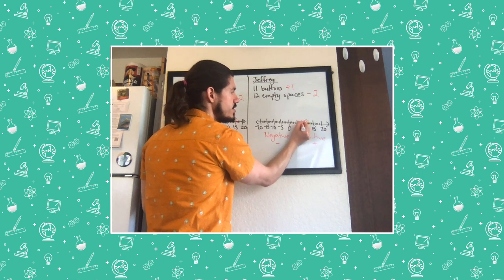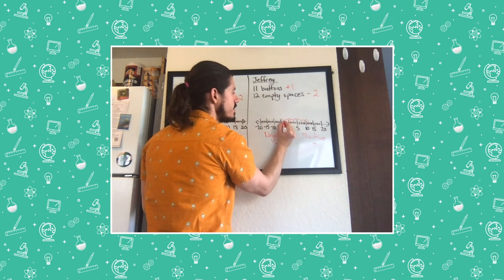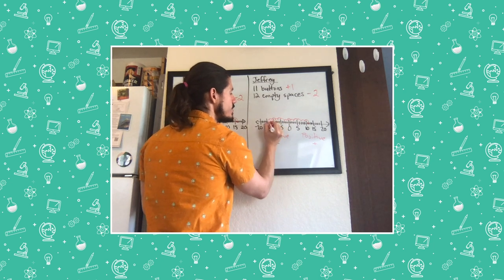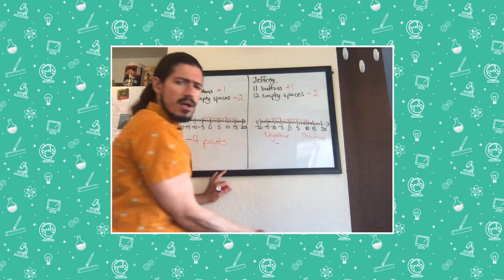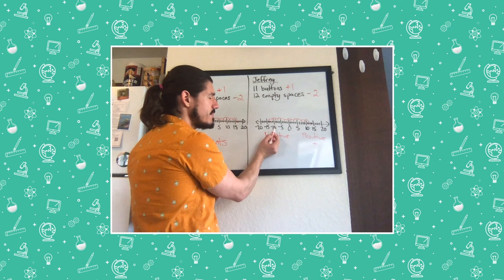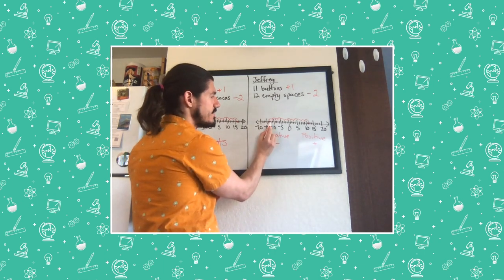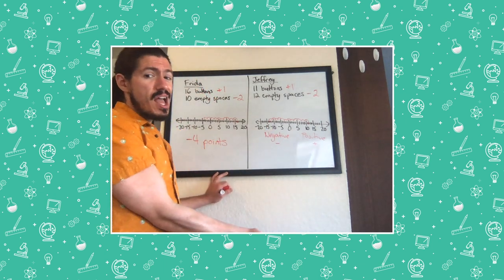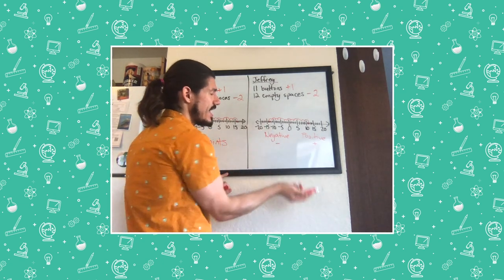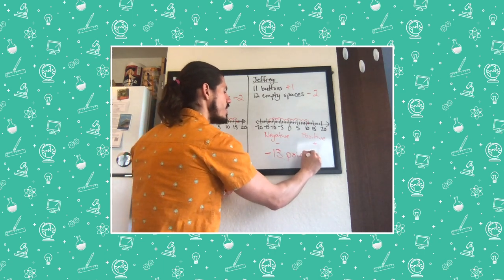One, two, three, four, five, six, seven, eight, nine, 10, 11, 12. What number did I end up on? Well, here's negative 10, and I need to count down from negative 10. Negative 11, negative 12, negative 13. I could have also gone down to negative 15 and count it up. Negative 15, negative 14, negative 13. Either way, Jeffrey finished with negative 13 points.